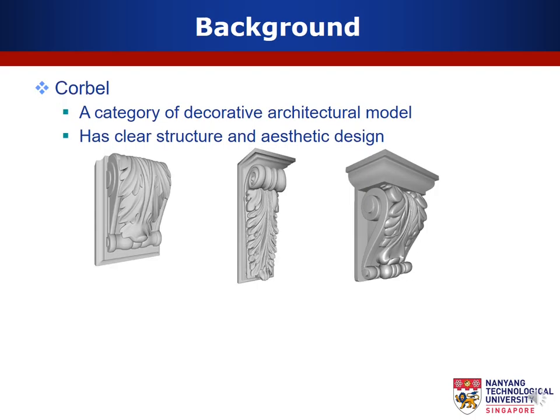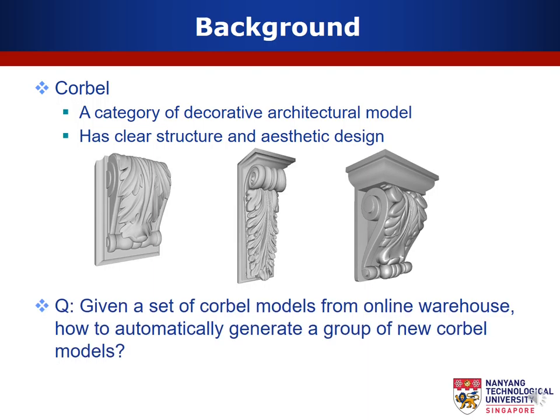A cobalt is a structural piece jutting from a wall to carry a supreme carbon weight. It's a typical category of decorative architectural geometry which has clear structure and aesthetic design. Note that there are tons of models available in online warehouses, which are well designed in varying shapes and styles. The question is, how to make use of the existing models and generate a group of new cobalt models from given examples?